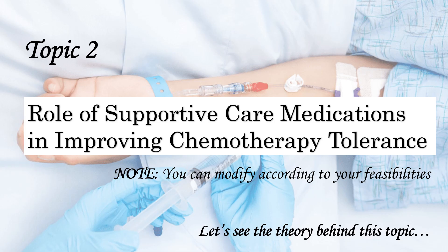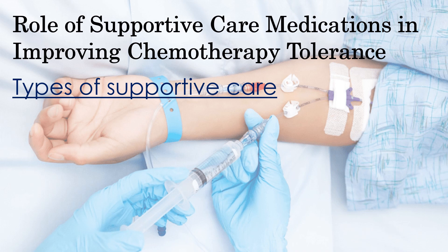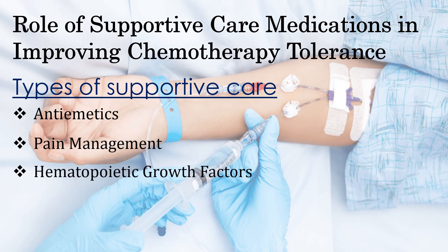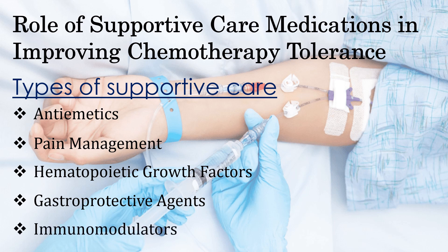Our next topic is the role of supportive care medications in improving chemotherapy tolerance. Types of supportive care medications: First, anti-emetics, used to prevent or control nausea and vomiting — common agents include ondansetron, a serotonin receptor antagonist, and aprepitant, which blocks neurokinin-1 receptors. Next, pain management — opioids like morphine and NSAIDs such as ibuprofen are commonly used depending on severity. Hematopoietic growth factors like filgrastim boost white blood cells, while epoetin-alpha treats chemotherapy-induced anemia. Gastroprotective agents such as omeprazole prevent ulcers and acid-related complications. Finally, immunomodulators help support immune function and reduce the risk of infections or autoimmune complications.